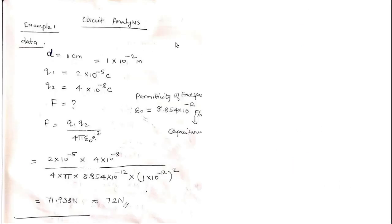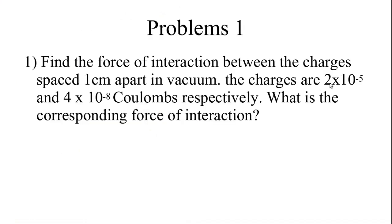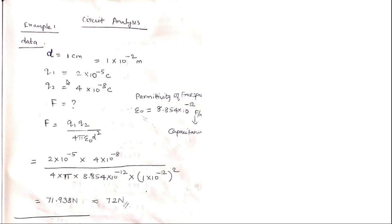I have written the given data here. D is equal to 1 centimeter, and q1 and q2 are written. When you are doing a calculation, you have to convert all data quantities into the basic SI units. Here it is given in centimeters, so you have to convert it into meters.